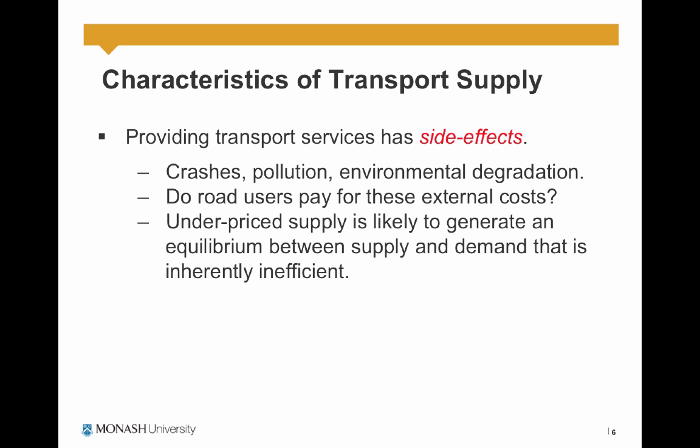Another characteristic of transport supply is that it has side effects relating to environmental degradation, transportation safety, and crashes. Do road users pay for these external costs and side effects? Actually not. We don't really pay for the environmental issues we create in the transport system — we don't pay for the pollution or the crashes we may generate. Underpriced supply is likely to generate an equilibrium between supply and demand that is inherently inefficient.